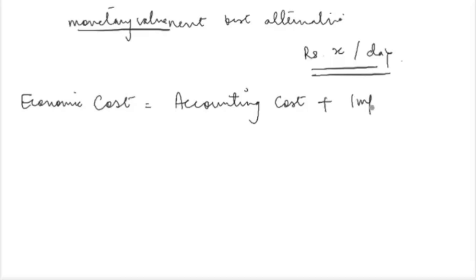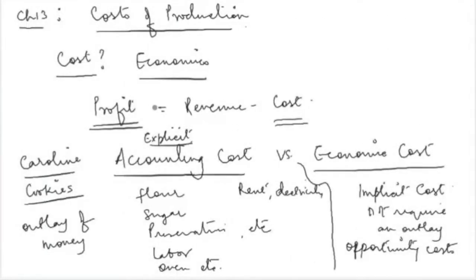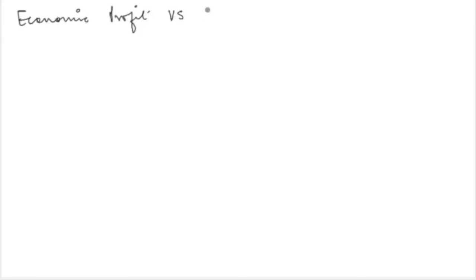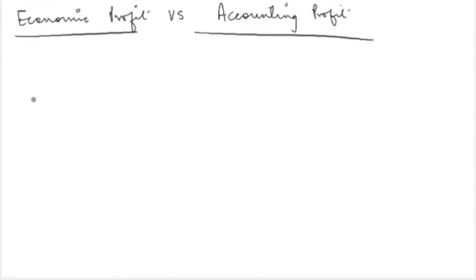Implicit cost, or opportunity cost, is always included in the definition of economic cost. Economic cost is the sum of accounting cost and implicit cost. When we say profit equals revenue minus cost, that cost refers to economic cost. This also means we need to modify our understanding of profit — differentiating between accounting profit and economic profit.